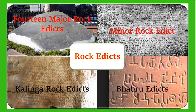The Major Rock Edicts of Asoka include: 14 Major Rock Edicts, Minor Rock Edicts, Kalinga Rock Edicts, and Babru Edicts.